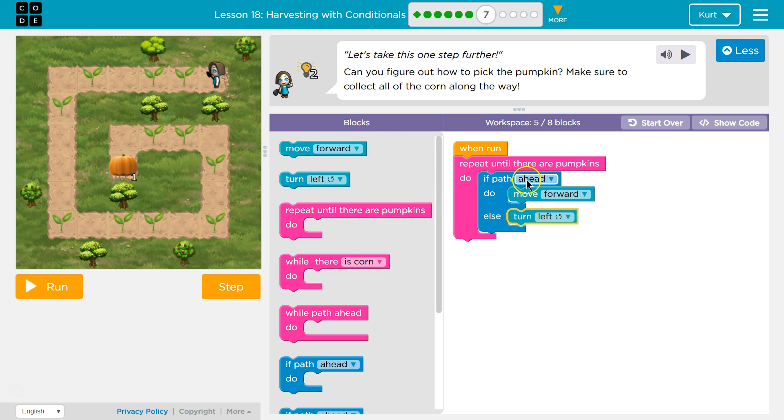So, now, if path ahead, move forward. Once I move forward, each block, what do I want to check? I want to check if there's any corn. How many times do I want to pick corn? We don't know, right? We've been doing this more than once. So, let's use a while loop for that.